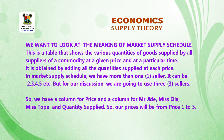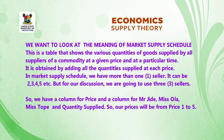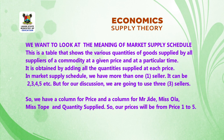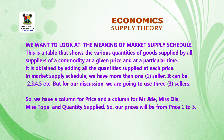Meaning of market supply schedule: This is a table that shows the various quantities of goods supplied by all suppliers of the commodity at a given price and at a particular time. It is obtained by adding all the quantities supplied at each price.